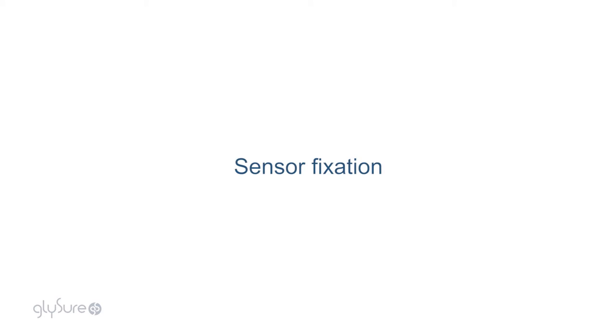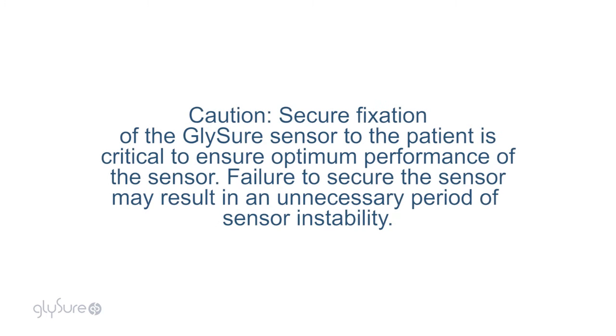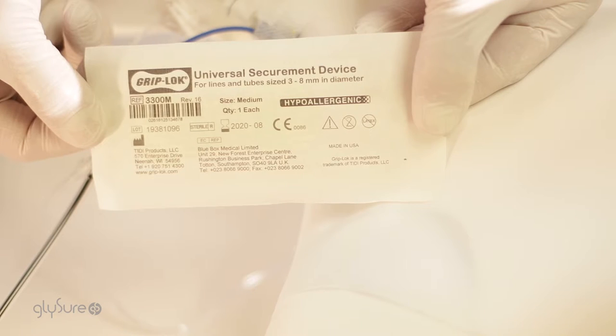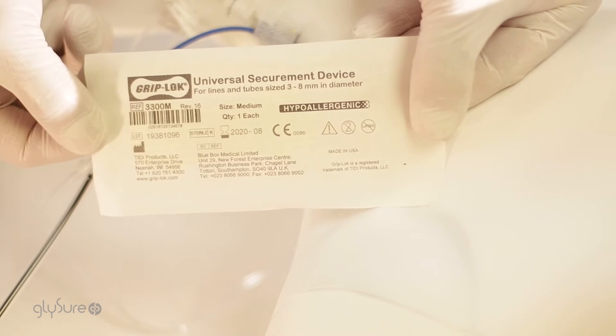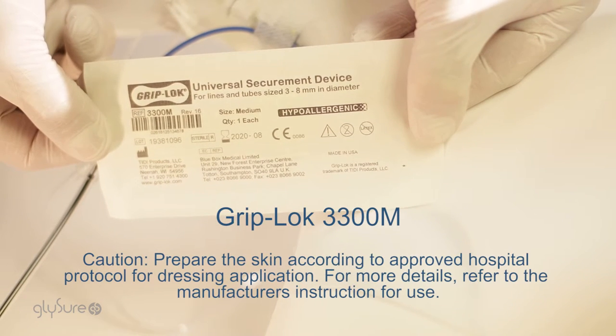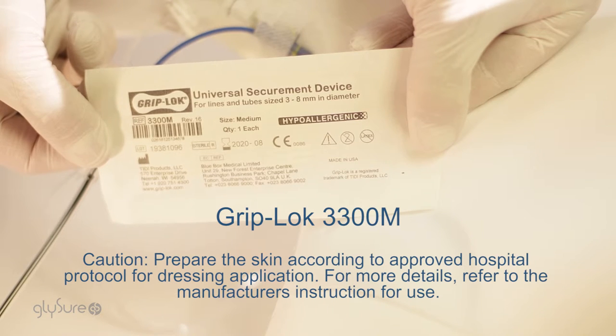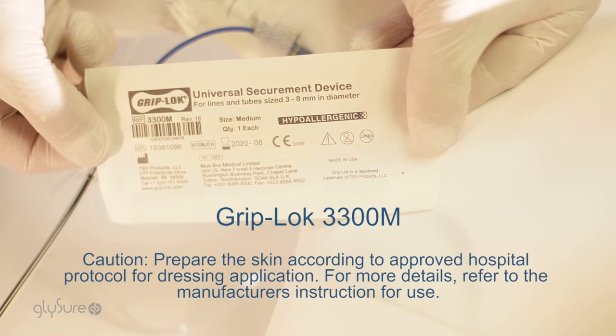Sensor fixation. Caution. Secure fixation of the Glishaw sensor to the patient is critical to ensure optimum performance of the sensor. Failure to secure the sensor may result in an unnecessary period of sensor instability. Using the recommended fixation device, Grip Lock 3300M, secure the introducer tubing to the patient.